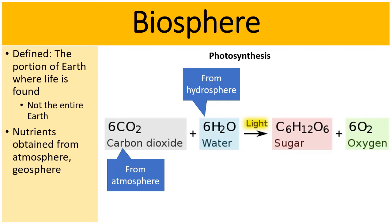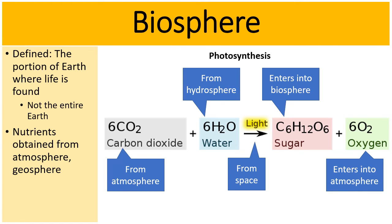Plants then do photosynthesis, and they make sugar. But the light comes from outer space. The sugar that they create during photosynthesis enters into the biosphere because it's available for other organisms to consume. And the oxygen that is released during photosynthesis, well, that's released into the atmosphere. So we start to see how all these spheres are kind of interconnected with one another.